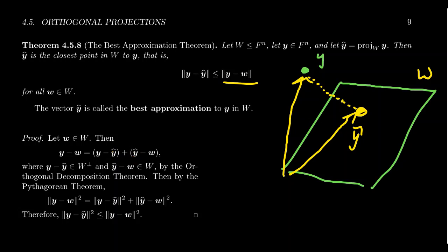But why is this sum important? This is actually the orthogonal decomposition that's guaranteed by the orthogonal decomposition theorem. Notice that y-hat belongs to W. The orthogonal projection does. And w is just some arbitrary element inside of W. And so the difference is a linear combination of vectors in W. Since it's a subspace, it'll be in there. So this vector belongs to W.